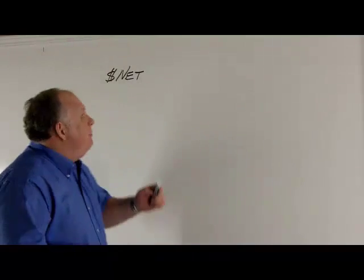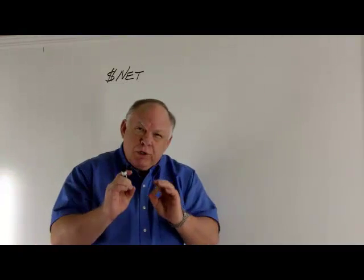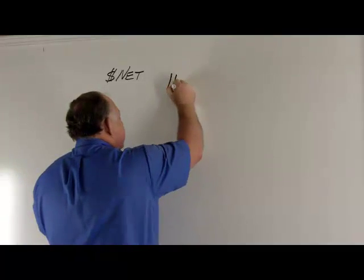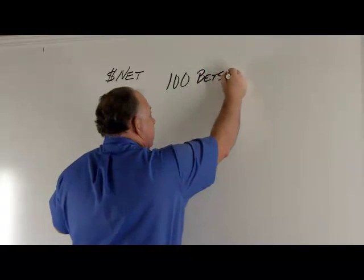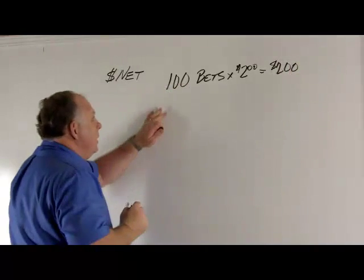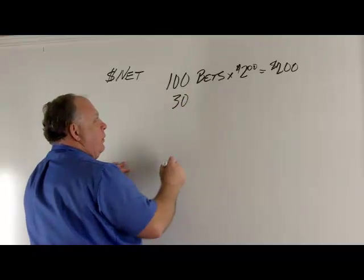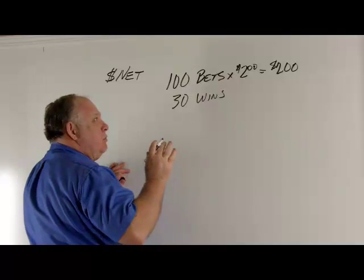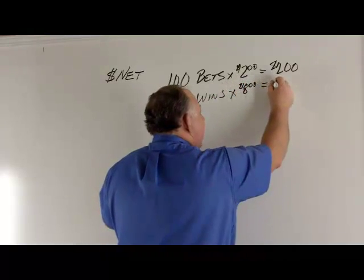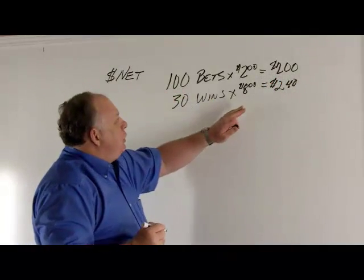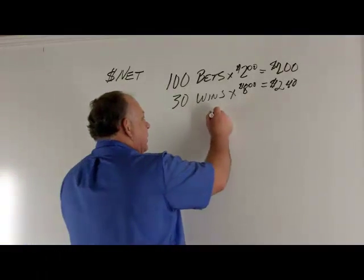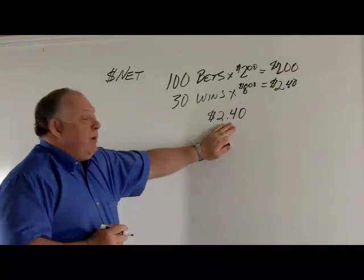Let's begin our discussion today with Dollar Net. Dollar Net is the average return for each $2 invested. For example, imagine you made 100 bets of $2 each — so you're in $200. Imagine you won 30 of those bets and the average mutual was $8. That's 30 wins times $8, which equals $240. Divide $240 by your 100 bets, and you get a Dollar Net of $2.40 — for every $2 you wager, you get back $2.40.